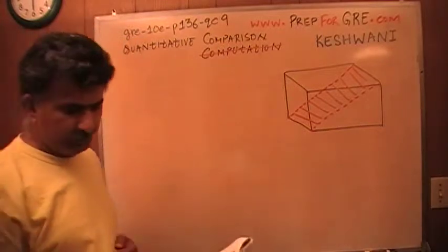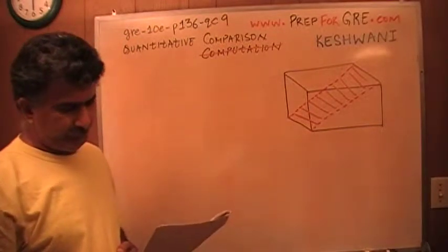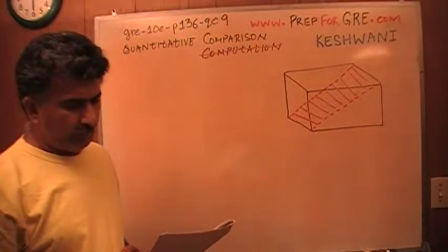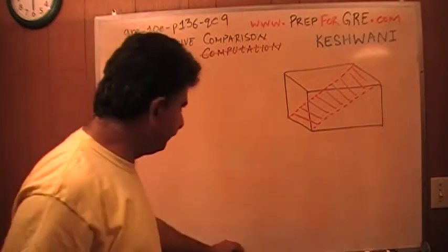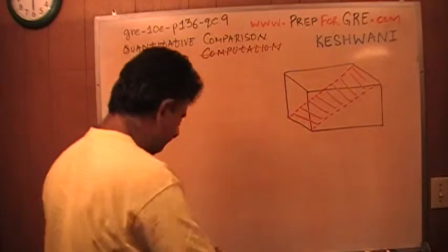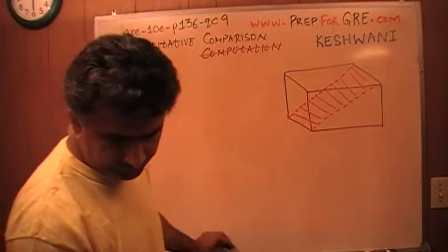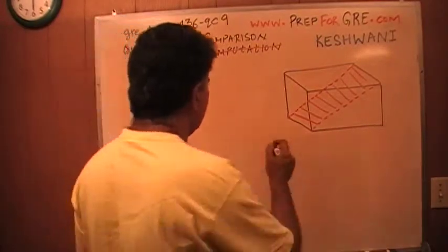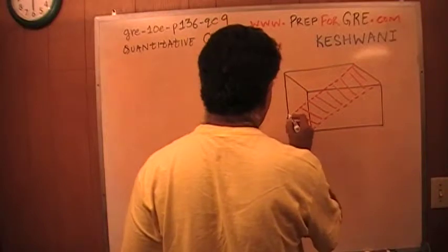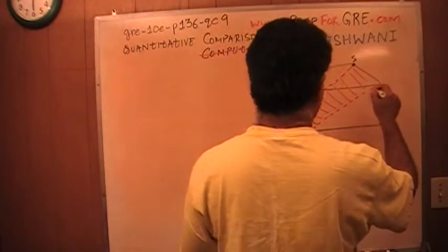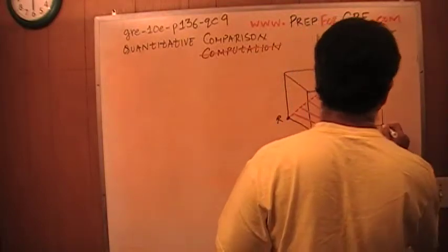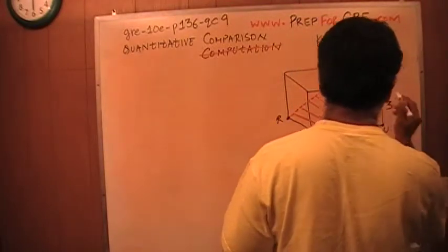Let's see what the problem is asking, actually. In the rectangular solid shown above, TU is 3. Let's see what is TU. R, S, T, U. TU is 3.